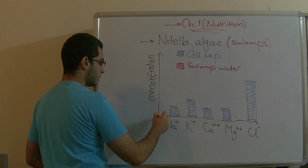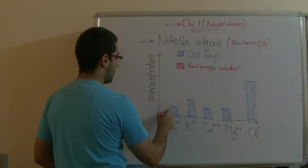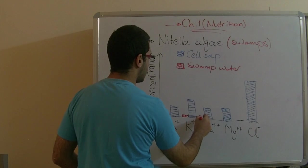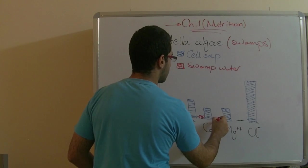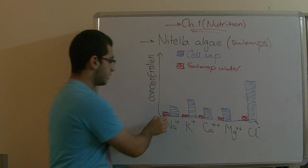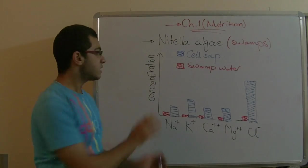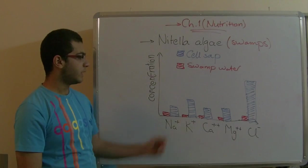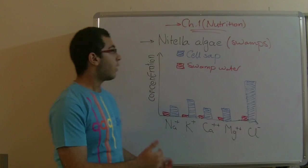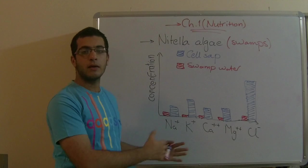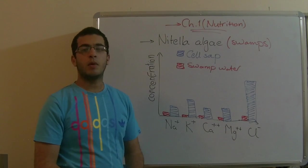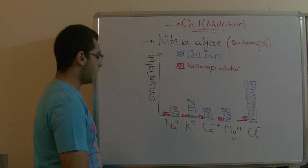We notice that the concentration of salts inside the cell sap is high. Looking at the swamp water salt concentrations — sodium, potassium, magnesium, and chlorine — each salt's concentration in the swamp water is very small compared to its concentration inside the cell sap. So how does the plant absorb salts from the outside swamp water into the cell sap? It uses active transport.